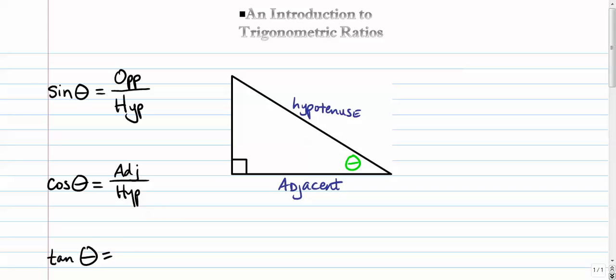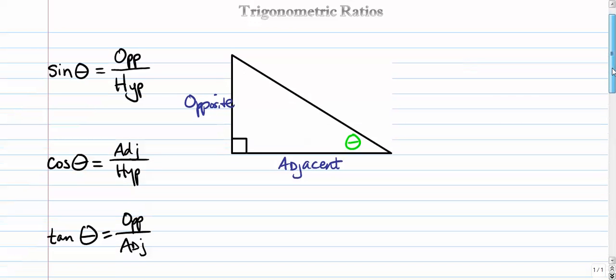Last one is tangent. The tangent is the only one that's not going to use the hypotenuse. It's going to use opposite divided by adjacent. So those are the ratios that you want to memorize.